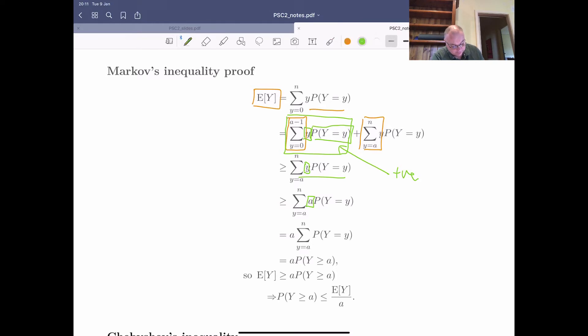So now we've got that. We will bring our a out the front. And now what we've got here, we've got a times the summation as Y goes from a to n, the probability of Y, which is just the probability of Y is greater than or equal to a. So let's put that all together.